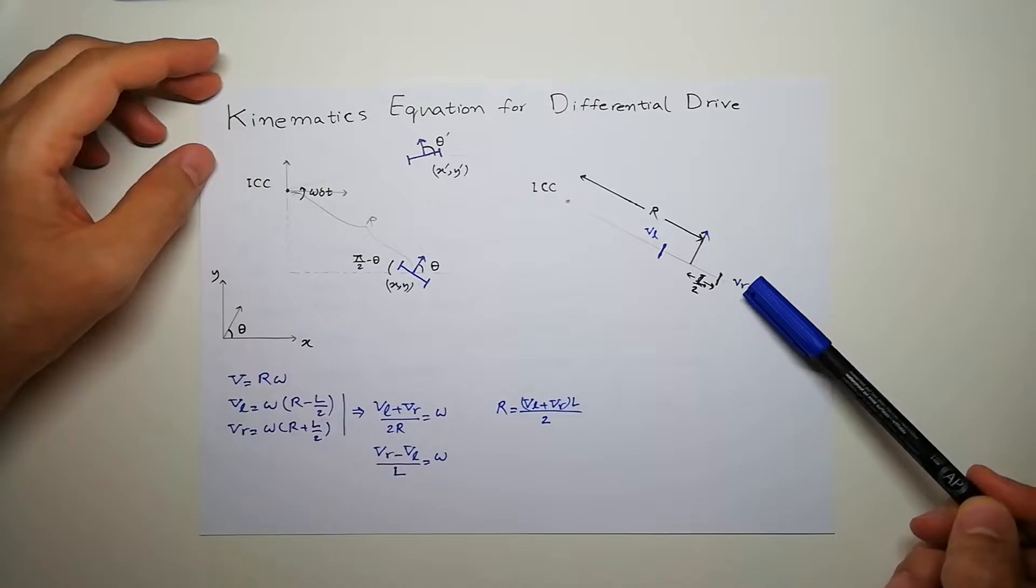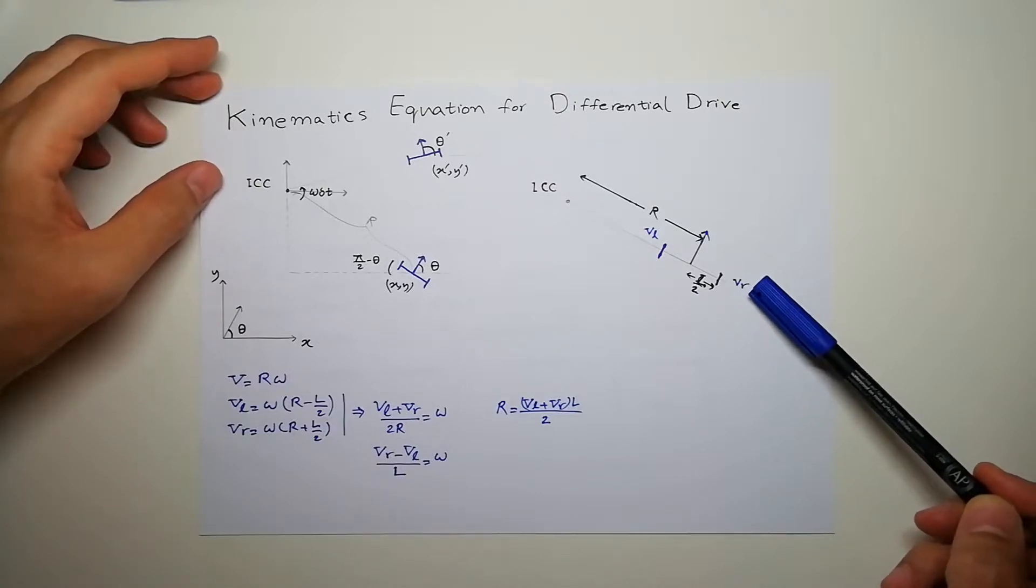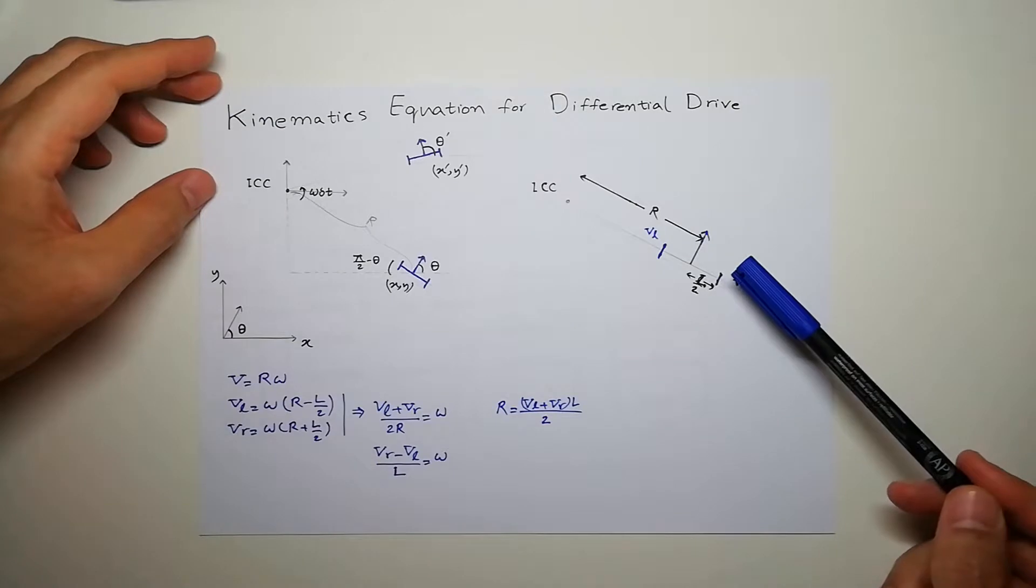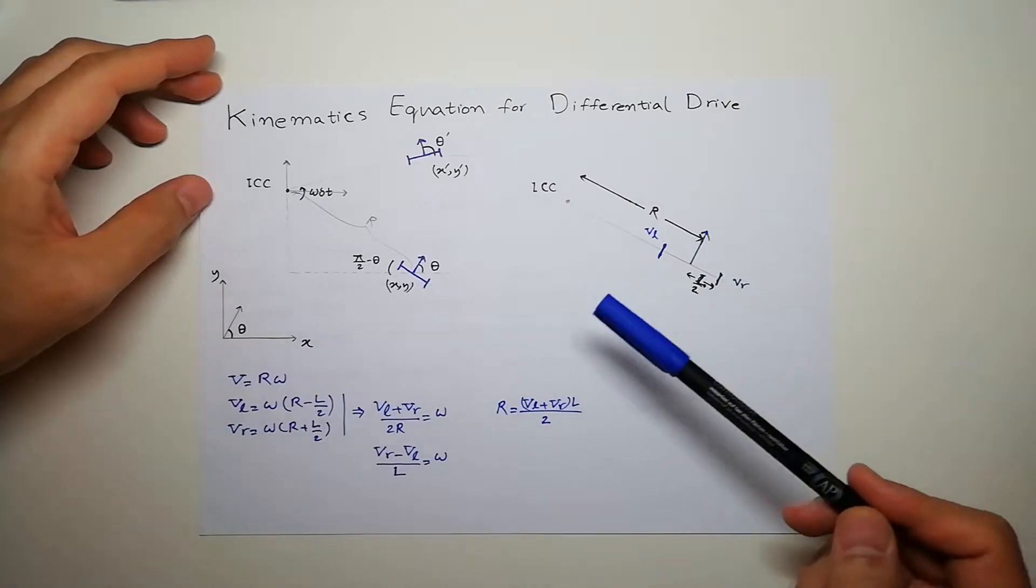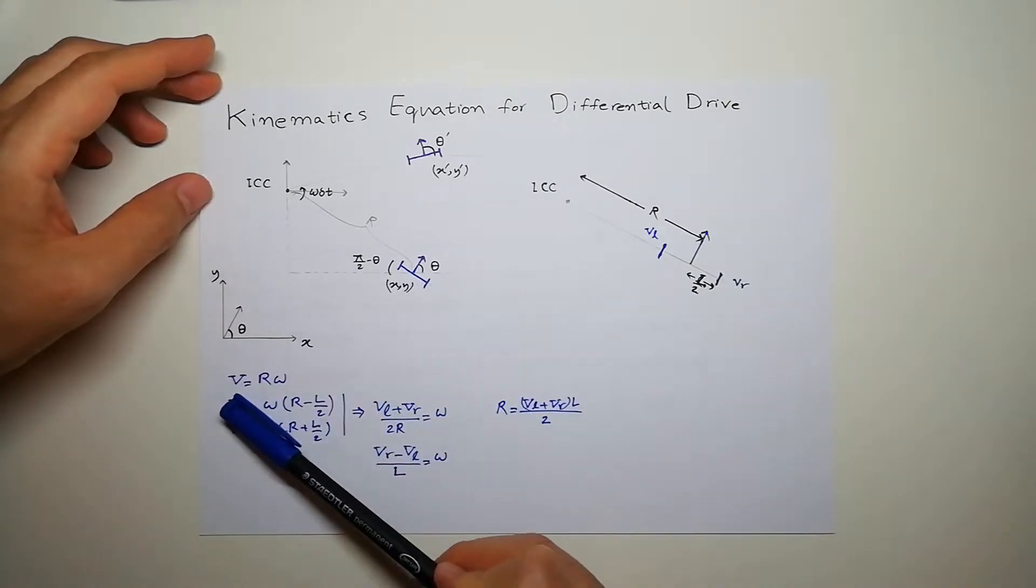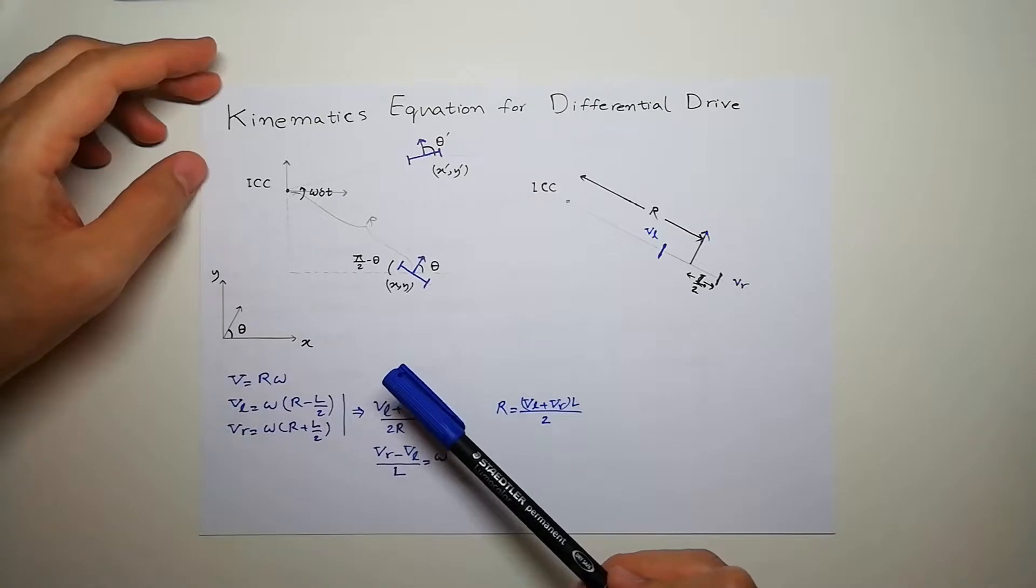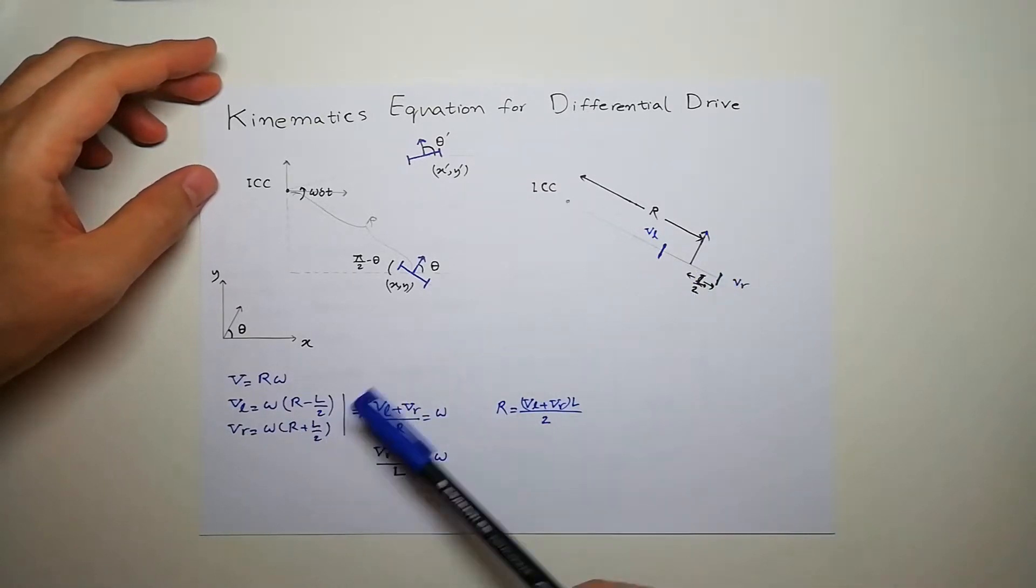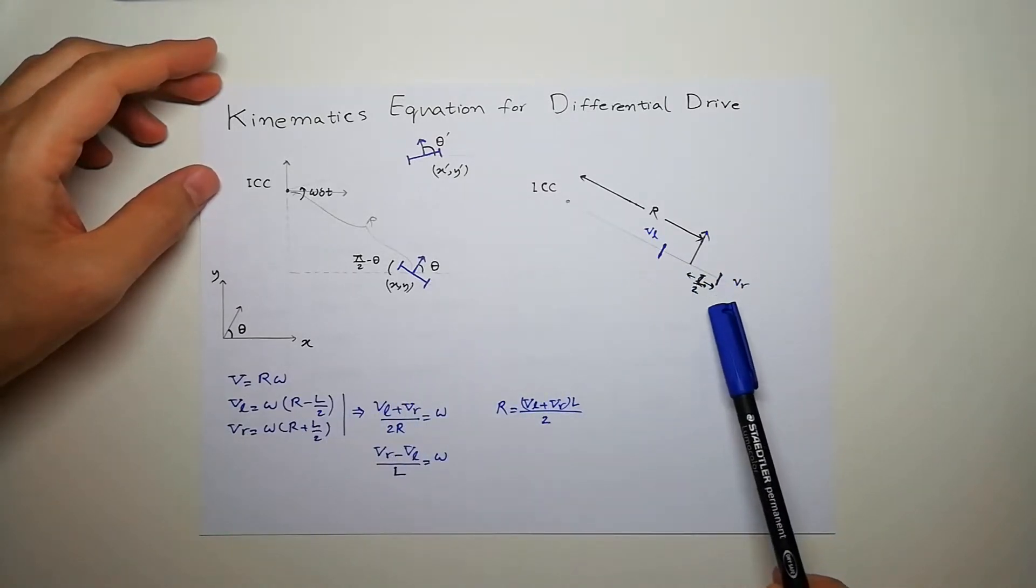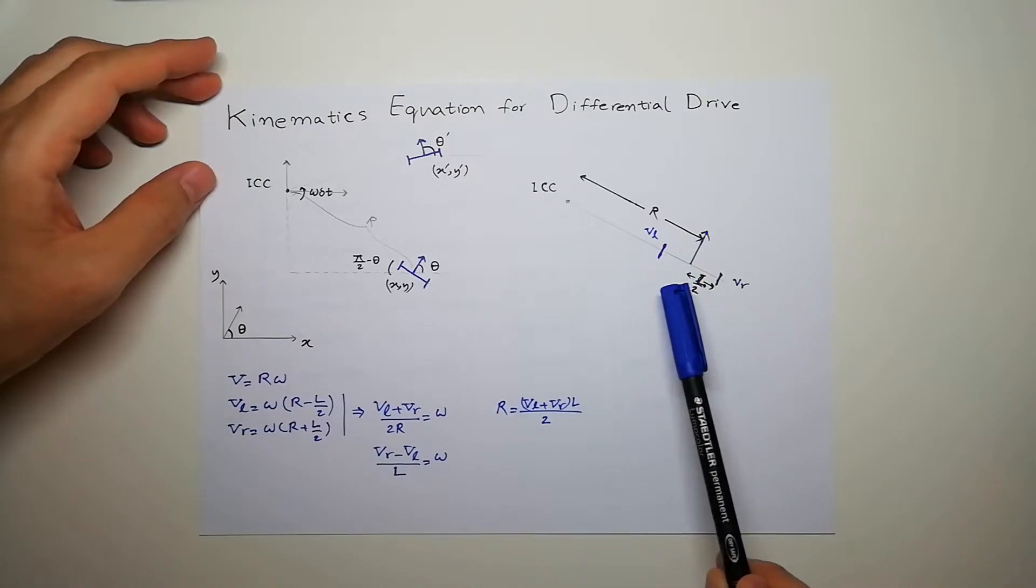The right wheel will turn with Vr, velocity of right wheel and left one Vl. So we know that velocity is equal to radius multiplied by omega. So for the right wheel it's going to be R plus L over 2 and for the left one R minus L over 2.